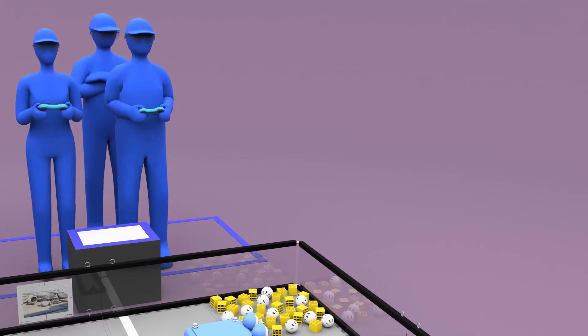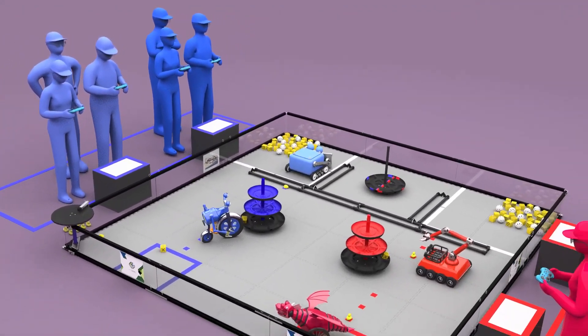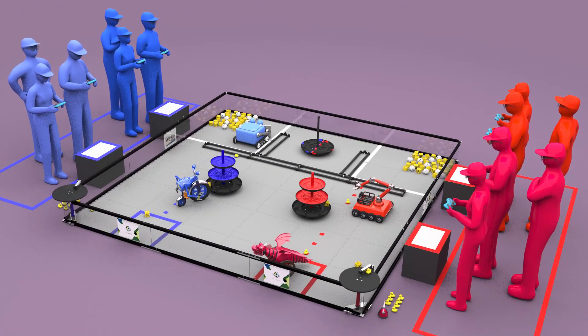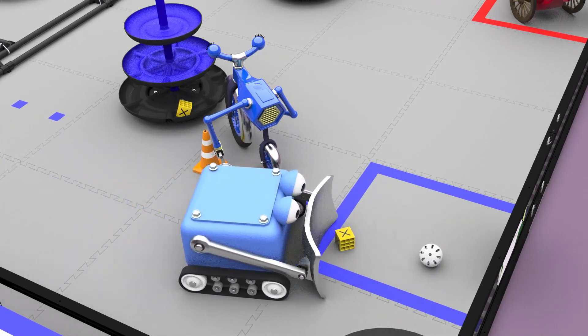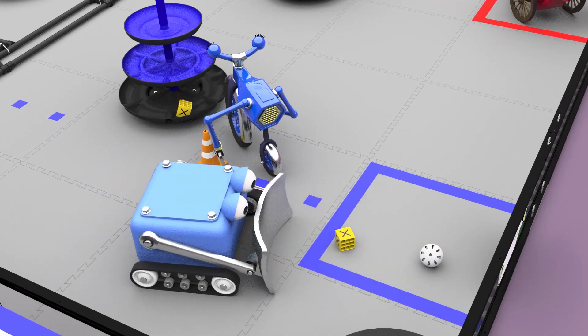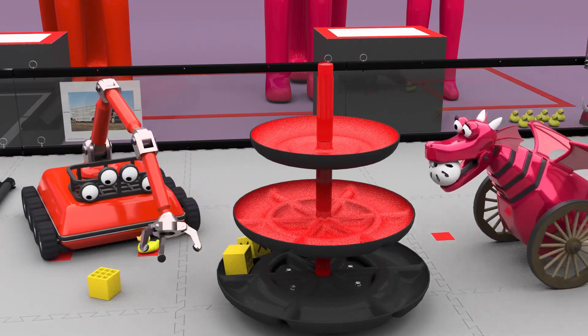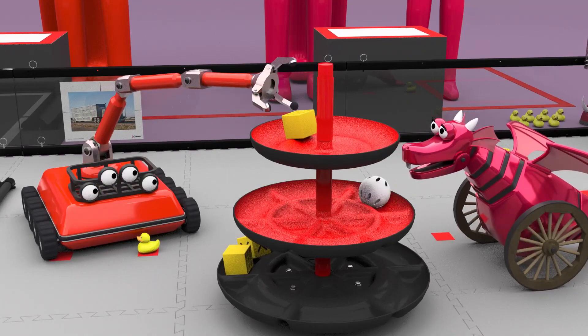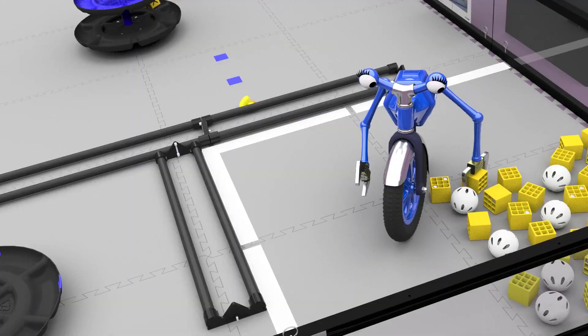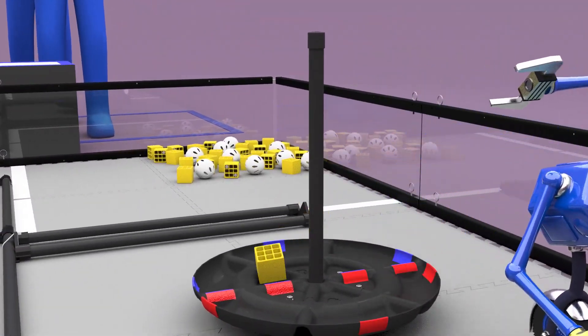Following the autonomous period is the two-minute driver-controlled period. During this time, alliances score points by delivering freight to storage units and shipping hubs. For example, each piece of freight delivered to an alliance's storage unit will earn one point. Freight scored on an alliance's shipping hub will earn two points on level one, four points on level two, and six points on level three. Each freight scored on the alliance's side of the shared shipping hub will score four points for their alliance.